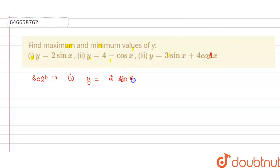We know that sine x will lie between minus 1 to plus 1. So the maximum value of sine x is 1 and minimum value of sine x is minus 1.